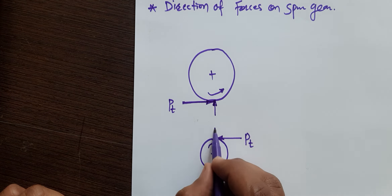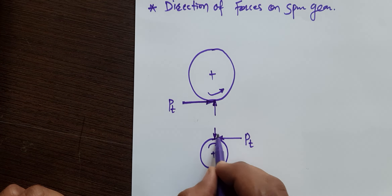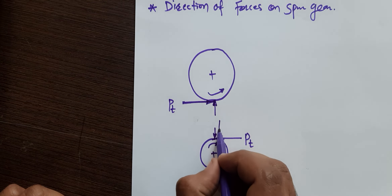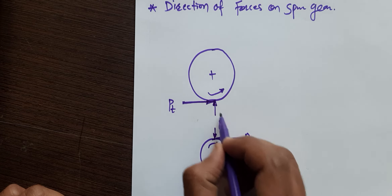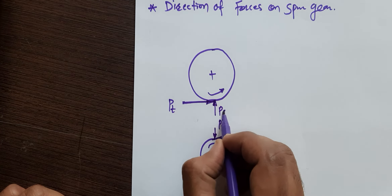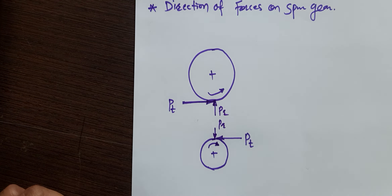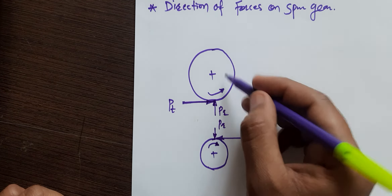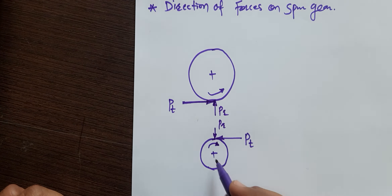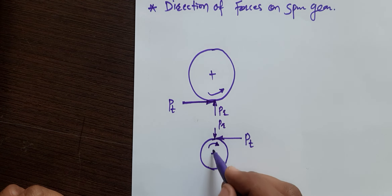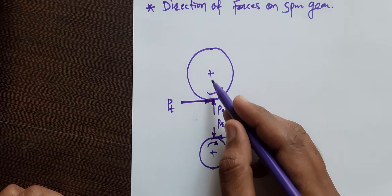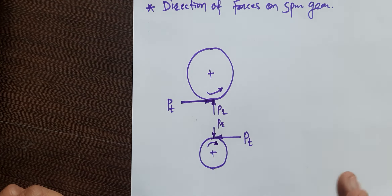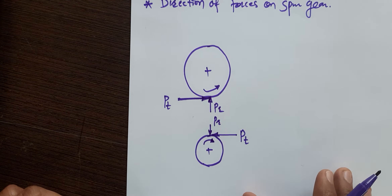The radial force will always act towards the center — towards the center of the gear and center of the pinion. On the pinion it acts towards the center of the pinion, and on the gear it acts towards the center of the gear.